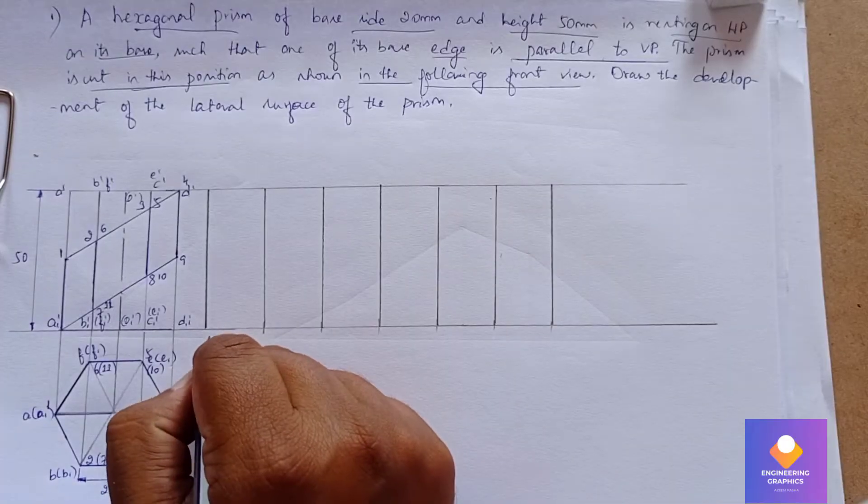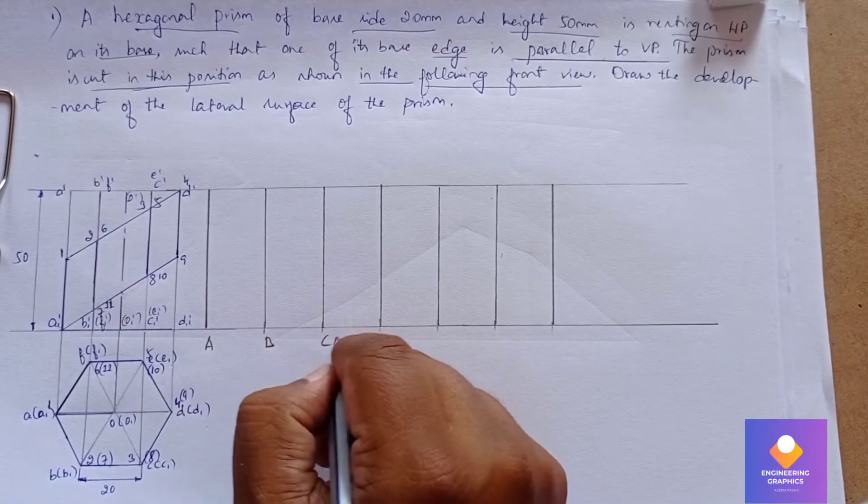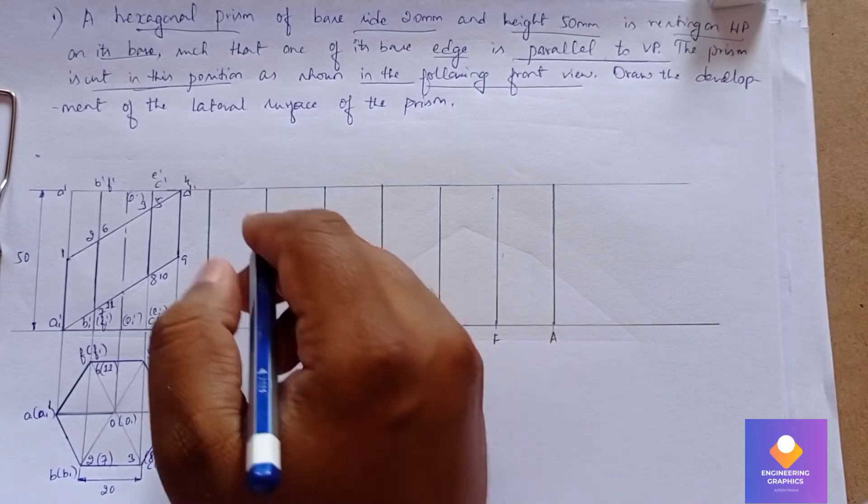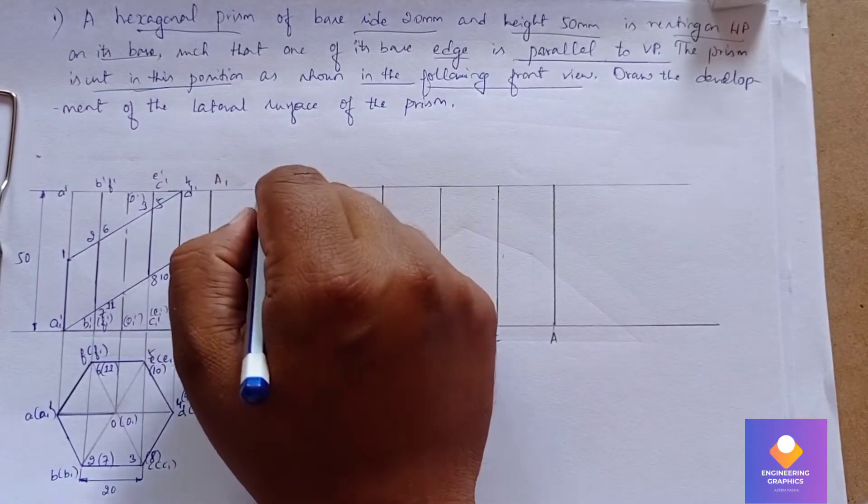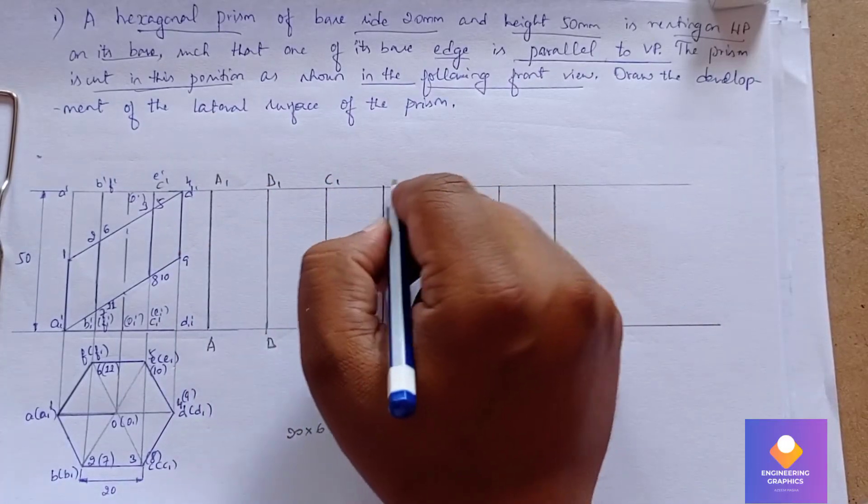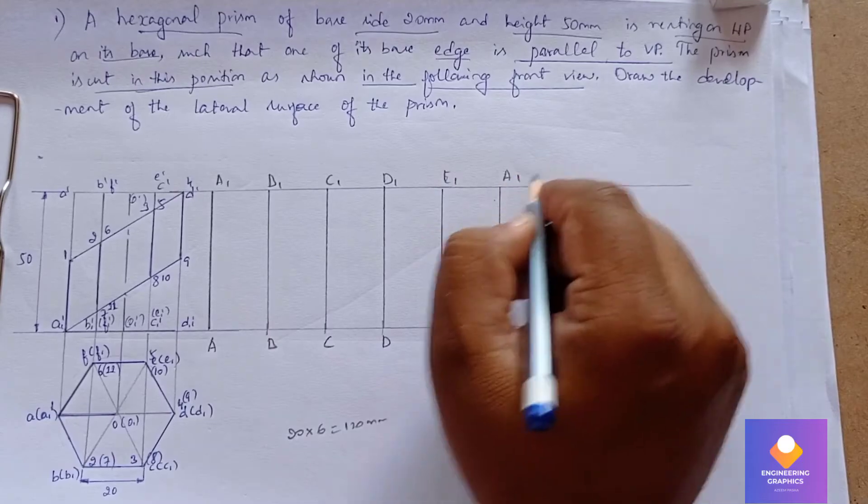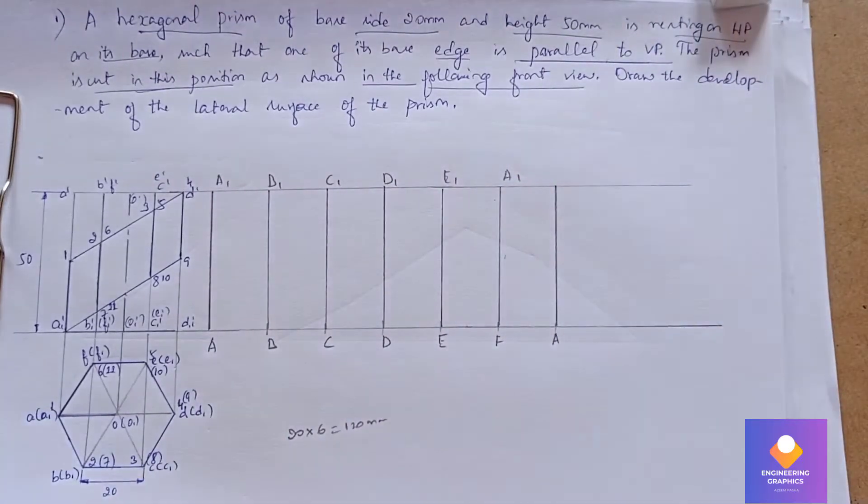Now you can mention capital A, B, C, D, E, F, A for the base. For the top face also we write A1, B1, C1, D1, E1, F1, and A1. So mention it - that is F1 and A1, let's just correct it.